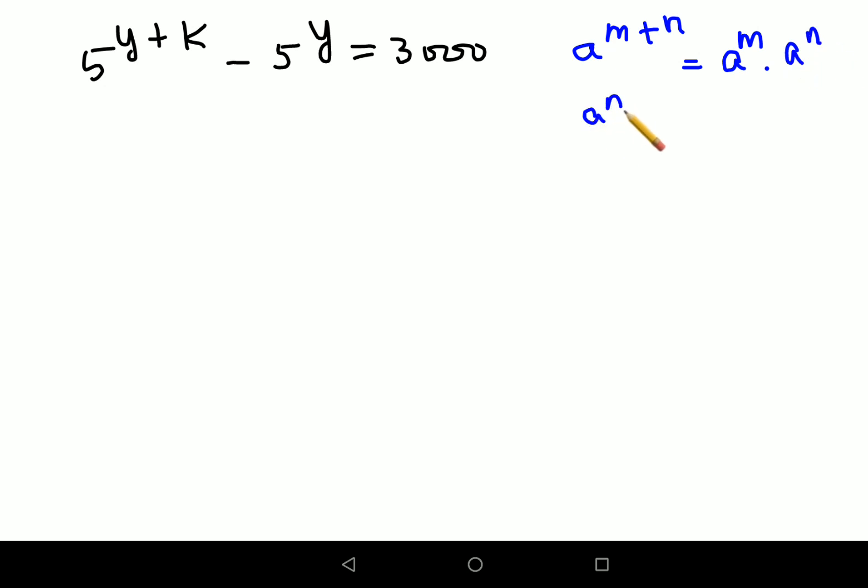So now understand in indices, when you have a raised to m plus n means the index has a positive sign or addition between two indices and it's raised to the same base. Then you can write this as nothing but what? a raised to m into a raised to n. Similarly, if you had negative m minus n, then you would have done what? a raised to m upon a raised to n. This is something which you need to remember always. So I'll write this as nothing but what? 5 raised to y into 5 raised to k minus 5 raised to y equals to 3000. Now if you look closely, your 5 raised to y is common. So let's take it out.